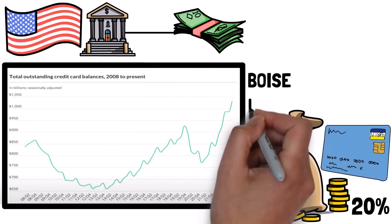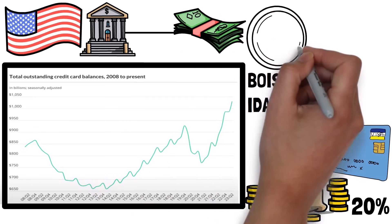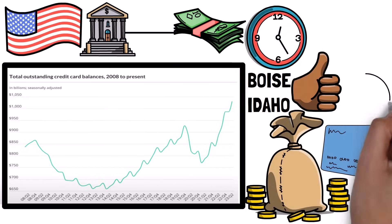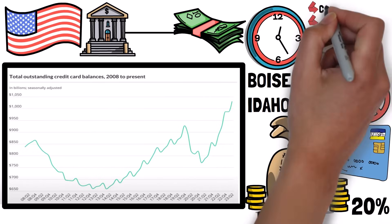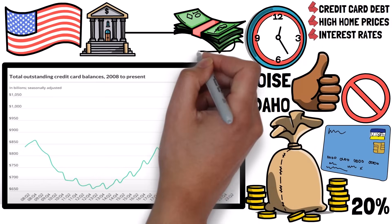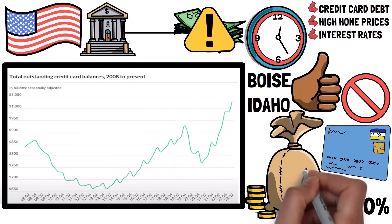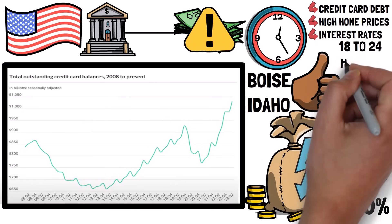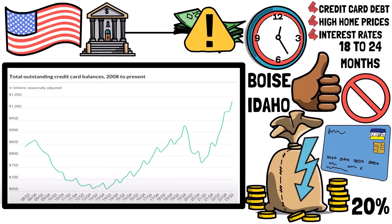In my experience in Boise, Idaho, many buyers are waiting for conditions to get better before buying because they can't afford it right now. With all these issues - credit card debt, high home prices, and interest rates - it's clear that there's an affordability problem. So in my opinion, prices have to come down, and they will probably drop in the next 18 to 24 months.